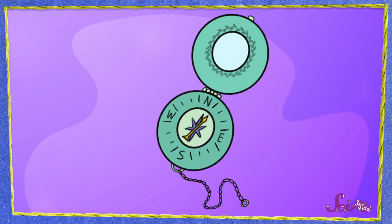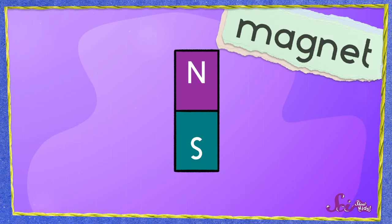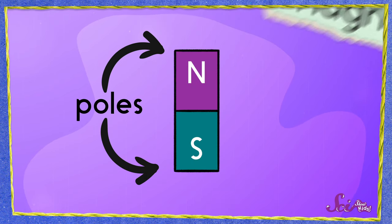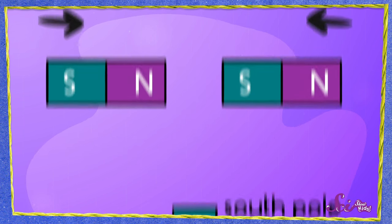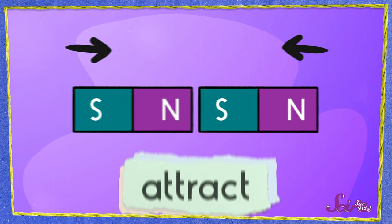Good question, Squeaks! But before I explain what happened in this experiment, let me explain how compasses work in general. The reason why a compass points north is really cool. It's because the pointy part inside is a magnet, and magnets have two ends called poles. One end of the magnet is called the north pole, and the other is called the south pole, no matter which direction they're facing.